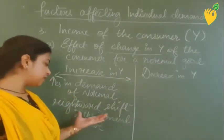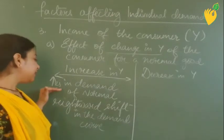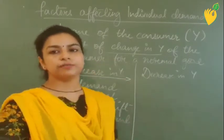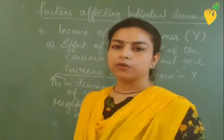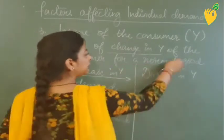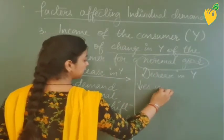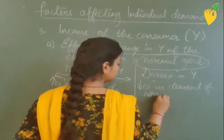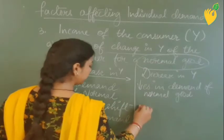There is a positive relationship between increase in income and demand for the normal good. Conversely, whenever there is a decrease in income of the consumer, there will be a decrease in demand for the normal good, and due to that decrease there will be a leftward shift in the demand curve.